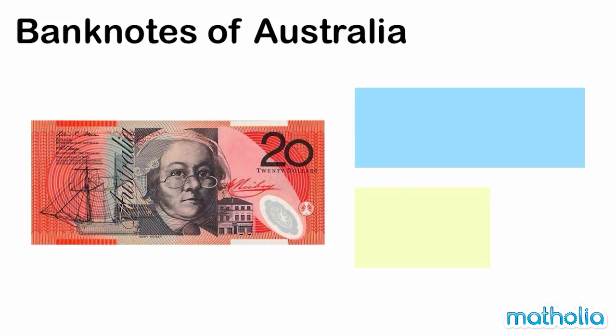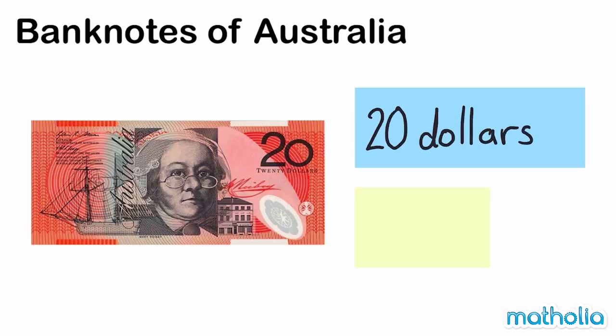This orange banknote is a twenty dollar note. Twenty dollars. We write twenty dollars like this.